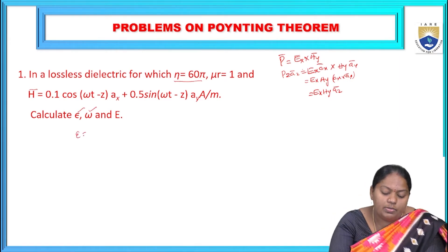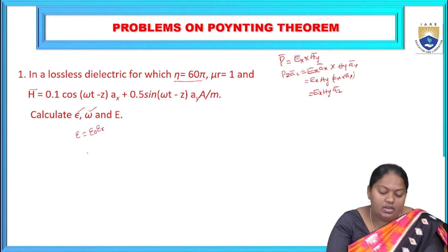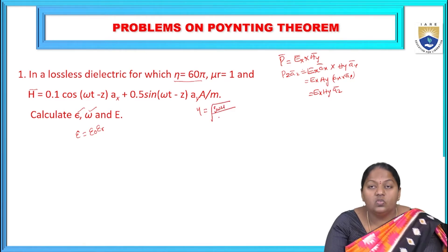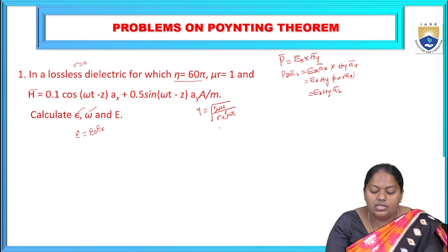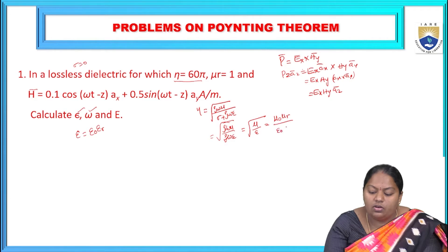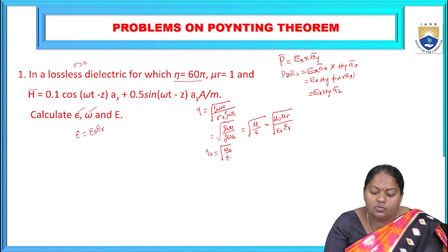To find epsilon first, the formula is epsilon = epsilon_0 · epsilon_r. To find epsilon_r for a lossless dielectric medium, the intrinsic impedance eta is generally given as sqrt(jωμ / (σ + jωε)). For lossless, sigma = 0, so this simplifies to sqrt(μ/ε) = sqrt(μ_0·μ_r / ε_0·ε_r). Therefore eta_0 = sqrt(μ_0/ε_0).